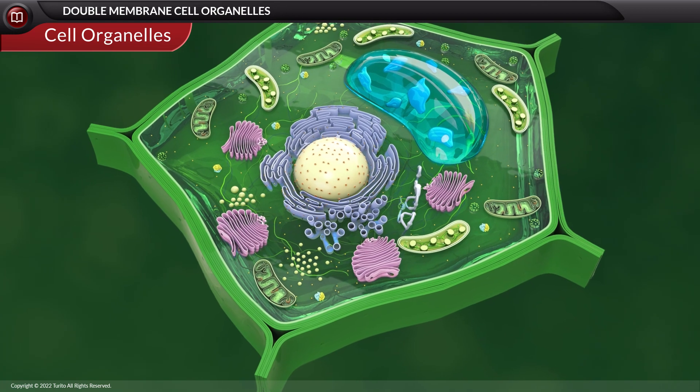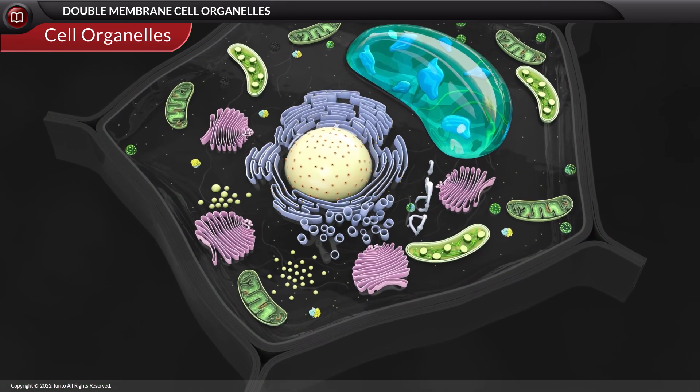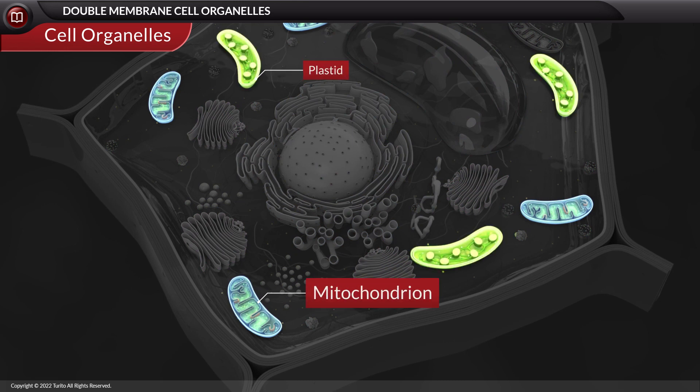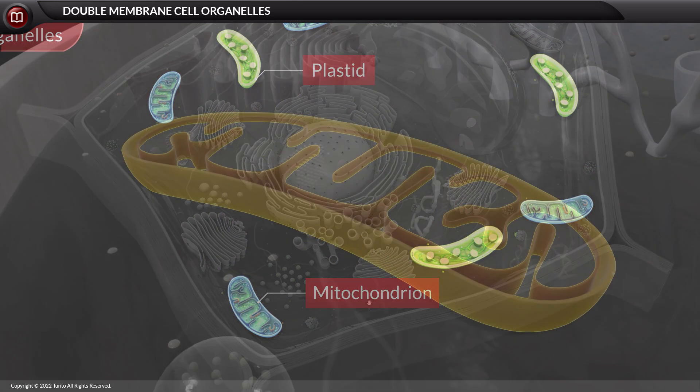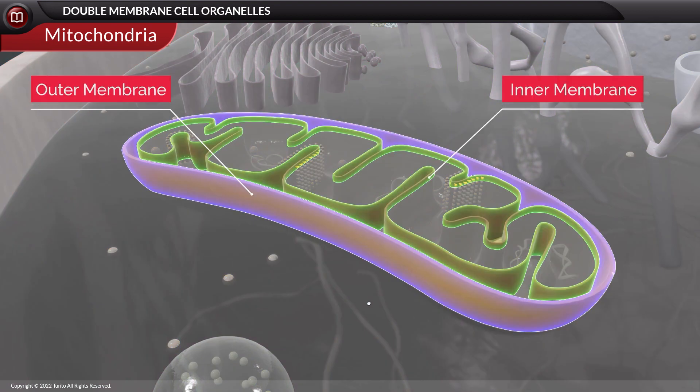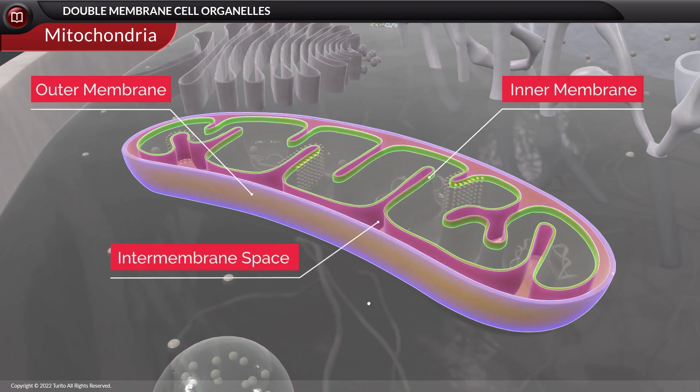Present among the amembranous and unimembranous cell organelles are the double-membrane cell organelles, the mitochondria and the plastids. Structurally, a mitochondrion consists of outer and inner membranes separated by an intermembrane space.